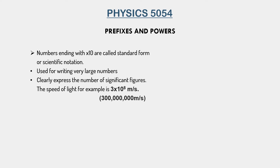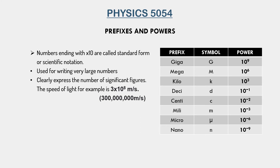The positive or negative sign for the power is very important when converting numbers from standard form into normal figures. Here are some prefixes that are commonly used and that you will be tested on in the O-level syllabus. Giga has the symbol G and a power of 10 to the 9. If any unit has this symbol next to it — for example, gigawatt — it means the value of a simple watt multiplied by 10 to the power 9. Similarly, mega has the symbol capital M and represents 10 to the power 6.